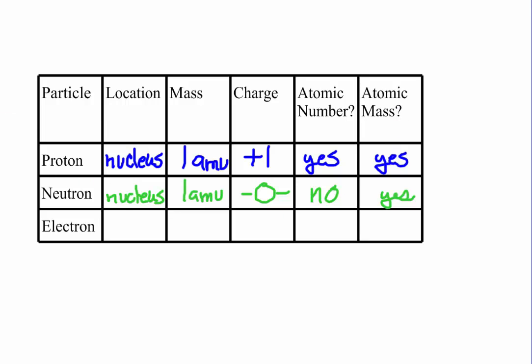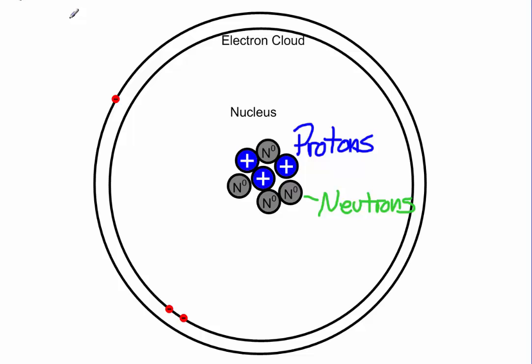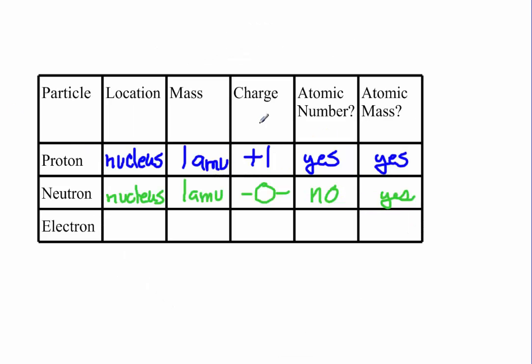Let's go back and look at these last particles out here, which are the electrons. Notice these electrons are much smaller than the protons and neutrons that we have here. The reason is that these electrons have no mass.